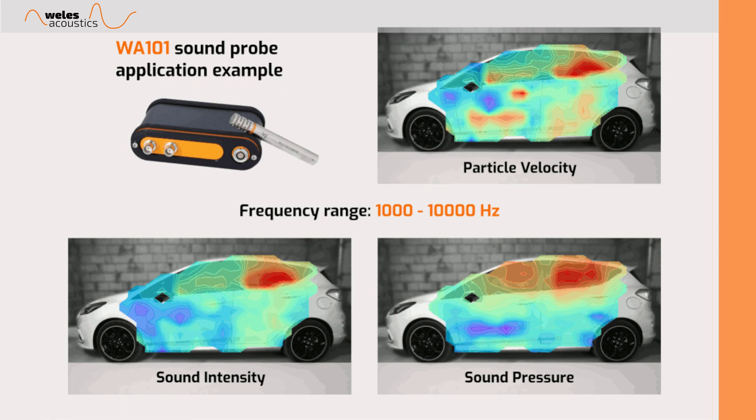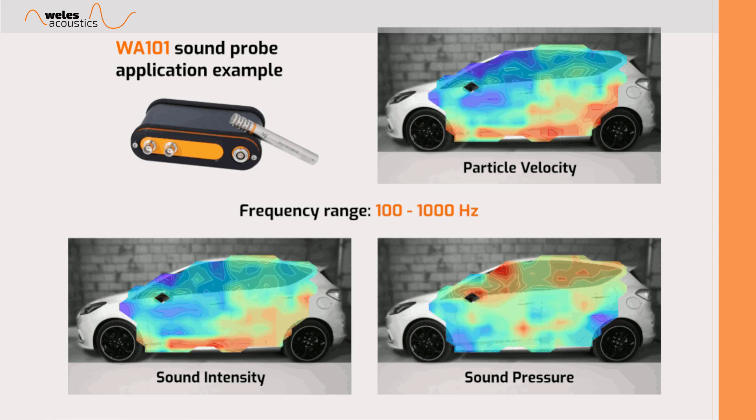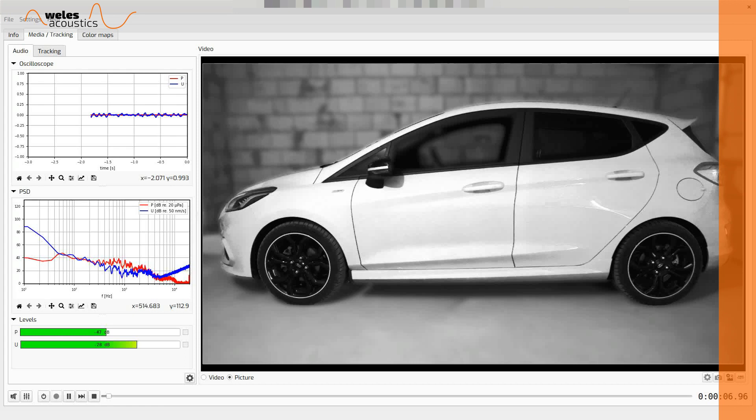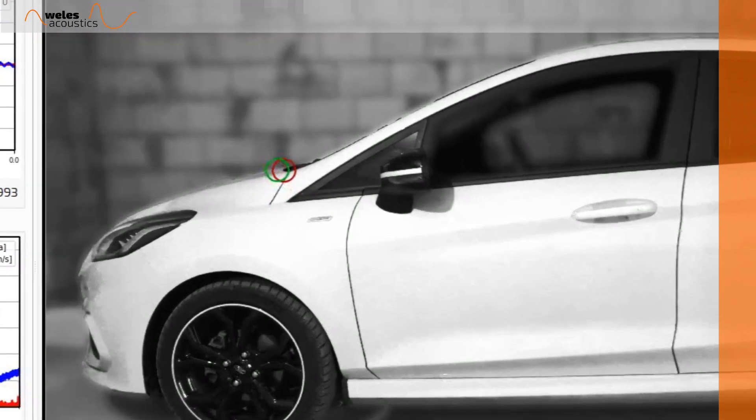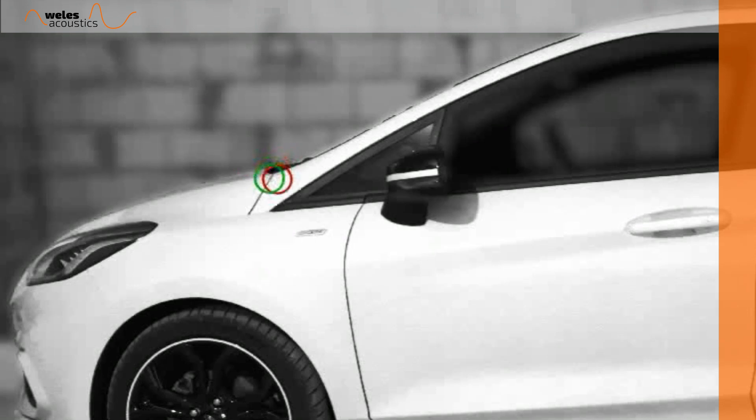The system is very easy to use. Here's an example of a scan aimed at detecting sound leakages on car doors. The WA-101PU probe is used to scan the entire left side of our car while a camera is recording the process.